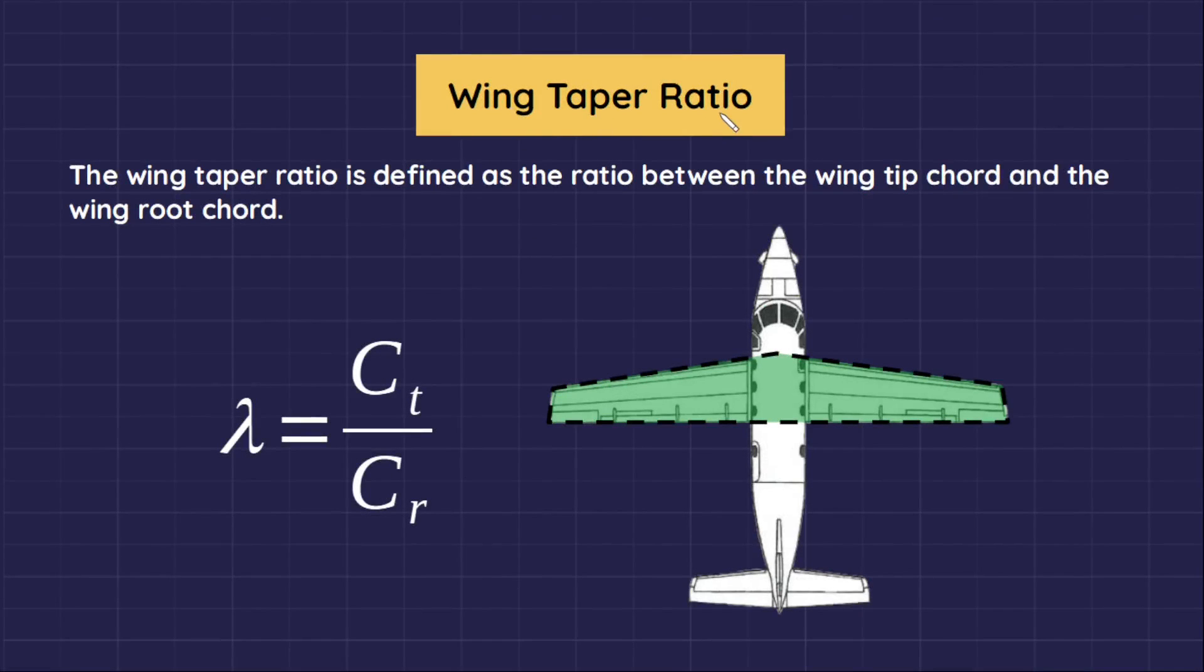Wing taper ratio. The wing taper ratio is defined as the ratio between the wing tip cord and wing root cord.